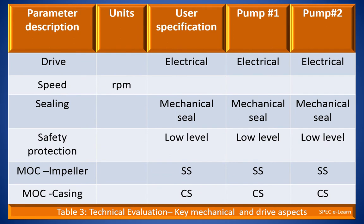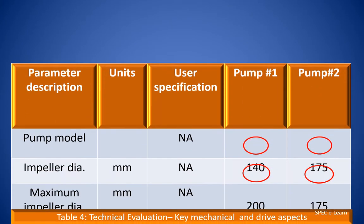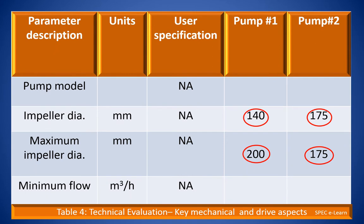The table shown here captures key mechanical and drive aspects: type of drive, speed, type of sealing, safety protection, material construction of the impeller, and material construction of the casing. An additional table captures pump model, impeller diameter, maximum impeller diameter, and minimum flow requirement. Some data in the fourth table are circled in red — these need closer scrutiny and analysis as they have significant impact on pump performance, which we will understand in the following slides.